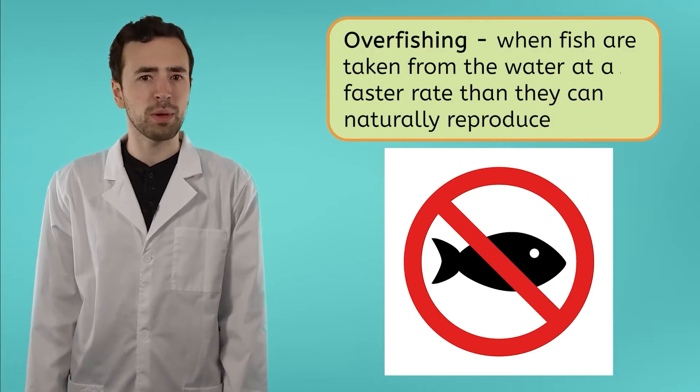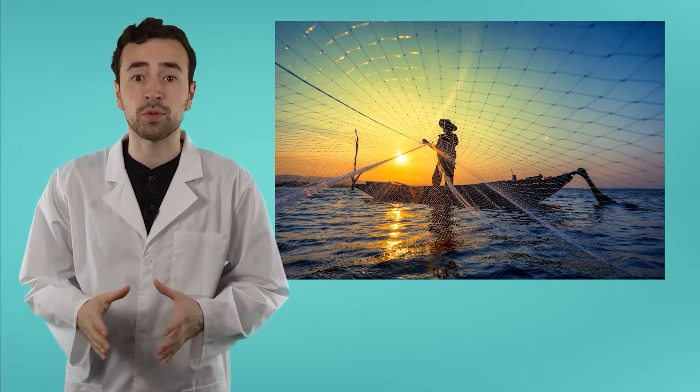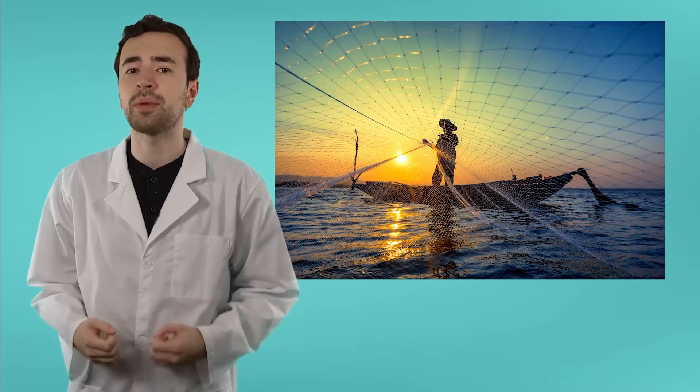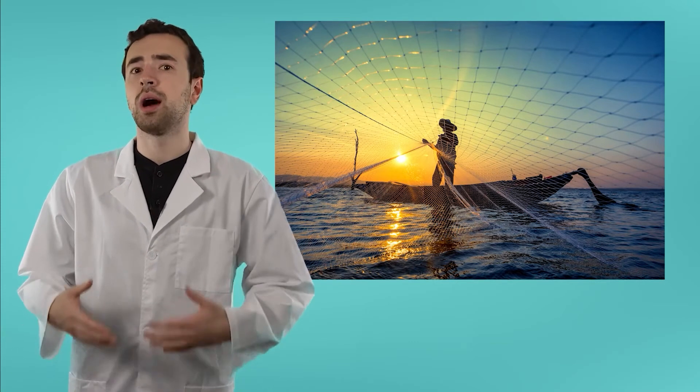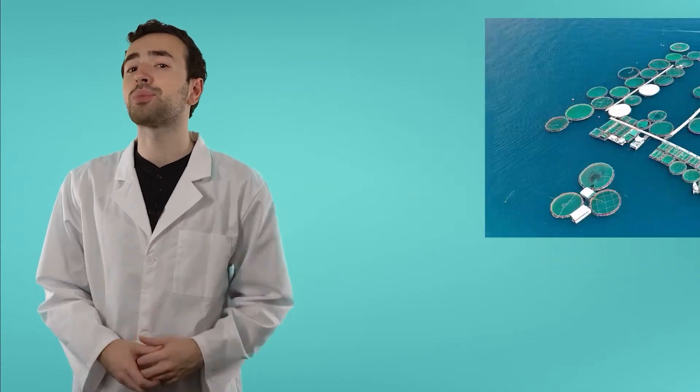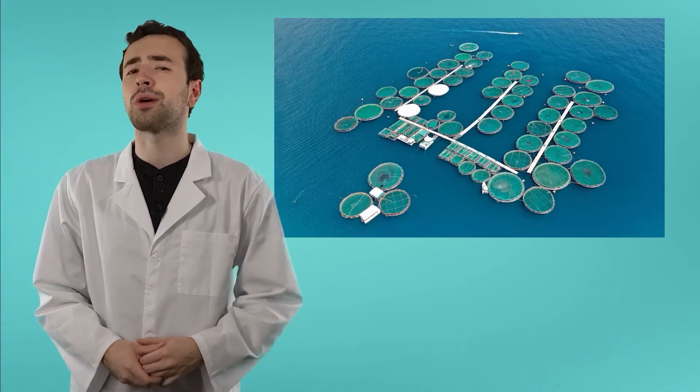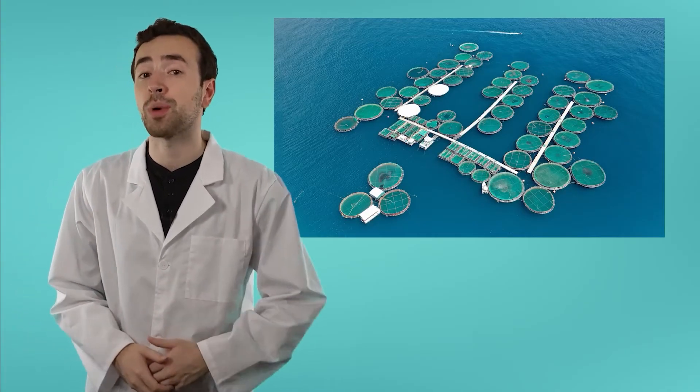Overfishing can be prevented though by making sustainable fishing choices, like setting catch limits for the number of fish that can be taken from a population, avoiding fishing during breeding seasons to allow fish populations to replenish, and establishing protected areas where humans are not allowed to fish, helping to restore overfished populations.